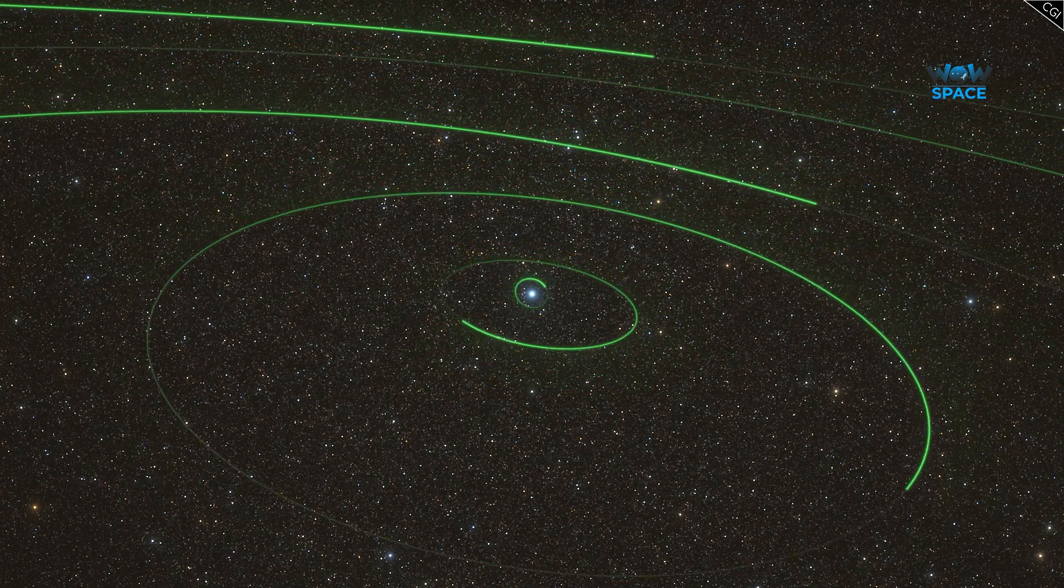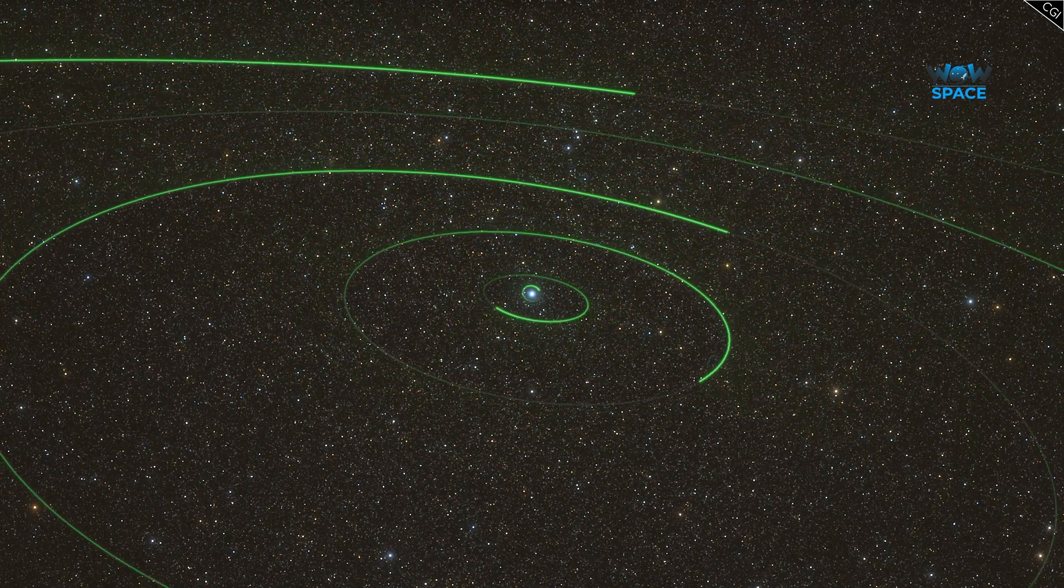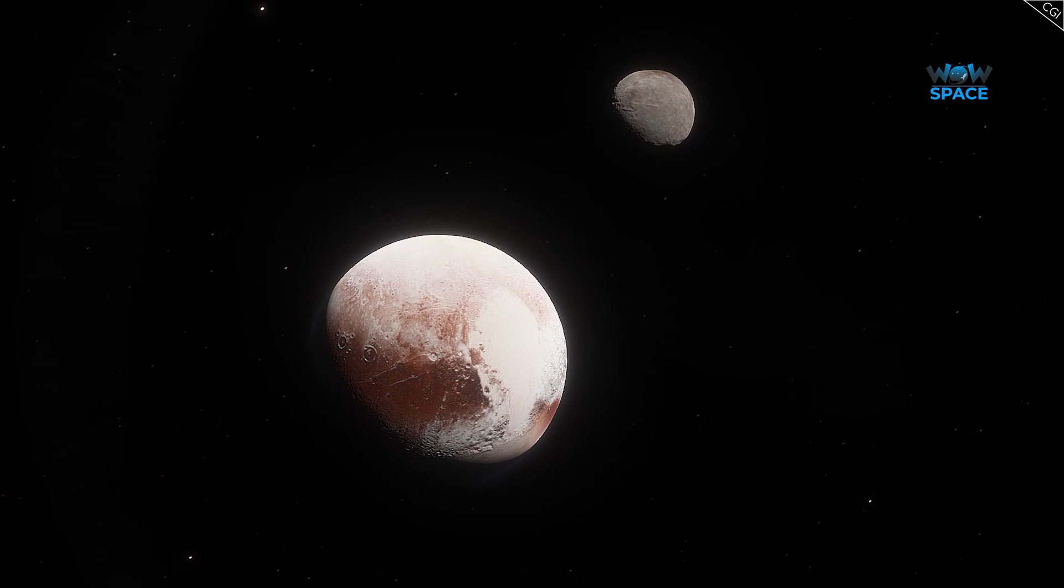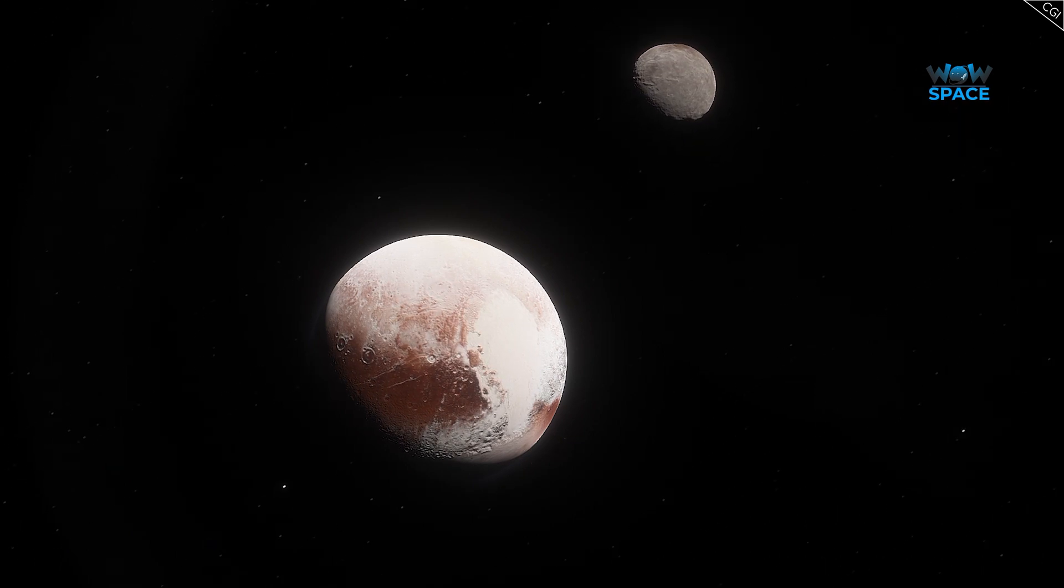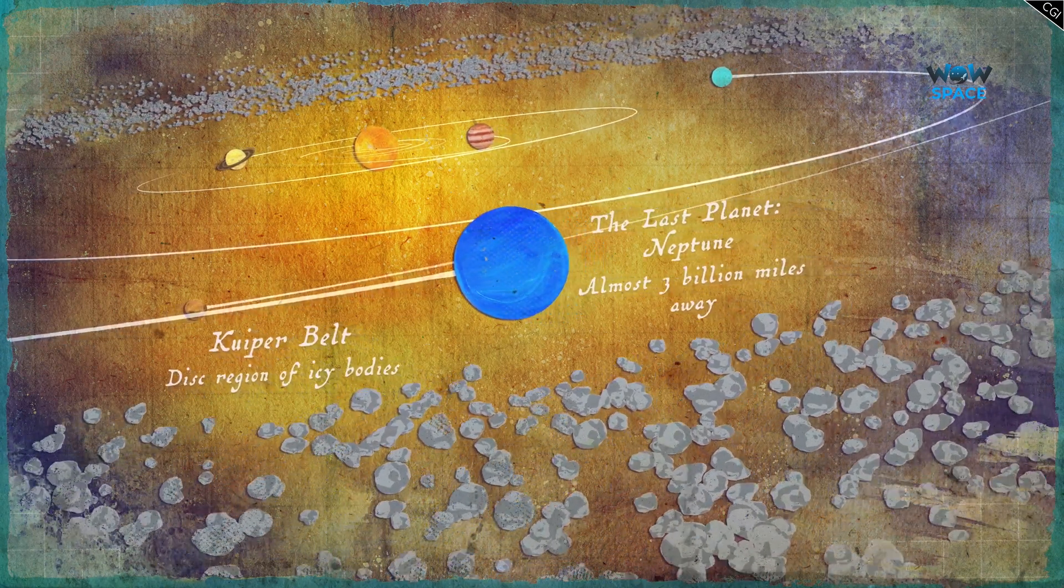Ever wondered where the boundary of our solar system lies? Is it up until the orbit of Pluto? The Kuiper Belt? Beyond?